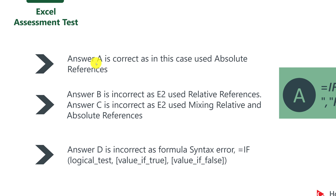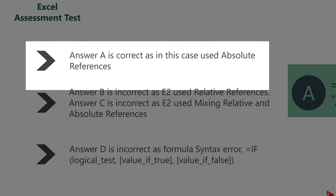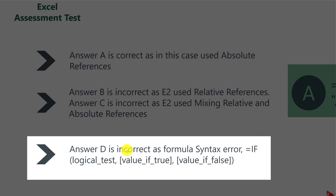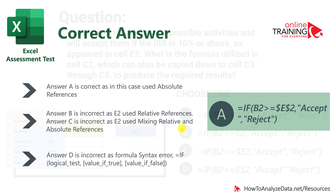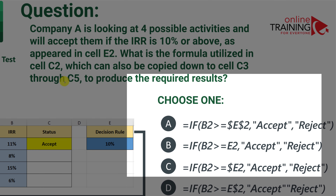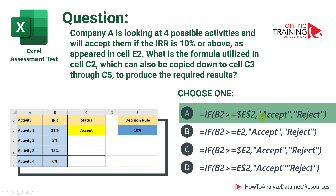The correct answer is A, because it uses absolute references. Choice B is incorrect because it uses relative references. Answer D is incorrect because there is an error in the syntax of the formula. Some of the answers do lead to the correct result for one cell, but because the question asks for a formula that can also be copied down to C3 through C5, that leads to only one correct answer.